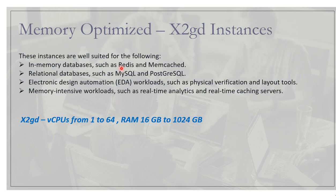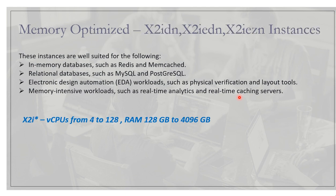The X2gd instances are good for in-memory databases such as Redis and Memcached, as well as memory-intensive workloads such as real-time analysis and real-time caching servers. The X2idn instances are good for all intensive workloads and real-time analysis, with virtual CPUs from 4 to 128 and RAM from 128 GB to 4096 GB.